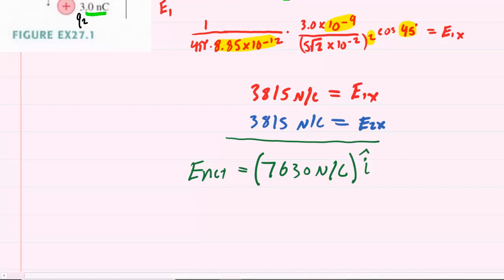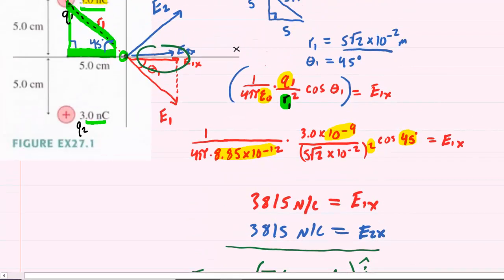Now, of course, another way of expressing this answer is to say that the magnitude of the net electric field is 7,630 newtons per coulomb. And then the angle at which the electric field is acting would be 0 degrees relative to the positive x-axis. And that's because if you look back at our drawing, both electric fields E1x and E2x were pointing along the positive x-axis.